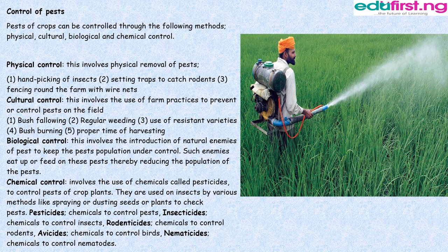Chemical control involves the use of chemicals called pesticides to control pests of crop plants. They are used on insects by various methods like spraying or dusting seeds or plants. Pesticides include: insecticides — chemicals to control insects; rodenticides — chemicals to control rodents; avicides — chemicals to control birds; nematicides — chemicals to control nematodes.